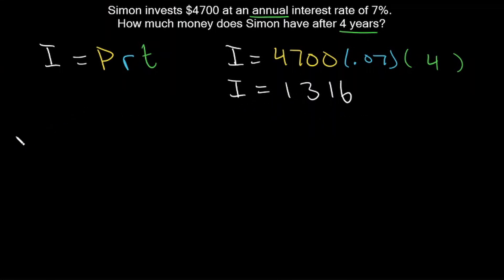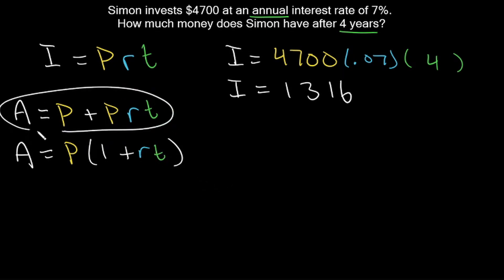But we need the total amount, which is represented by A. So if our interest is how much money someone makes, then to calculate our total amount, we need to add the principal to our interest. So P plus P times r times t. We can also write that, if we factor out a P, as the principal times 1 plus r times t. But I prefer to use this formula because it's easier to conceptualize it as principal plus interest.